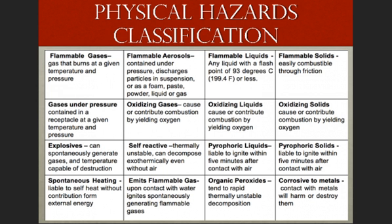There are 16 physical hazards classified under GHS. I will cover each of these physical hazards in this presentation, but for right now I will simply list each one prior to discussing each specifically: flammable gases, flammable aerosols, flammable liquids, flammable solids, gases under pressure, oxidizing gases, oxidizing liquids, oxidizing solids, explosives, self-reactives, pyrophoric liquids, pyrophoric solids, spontaneous heating, emits flammable gas, organic peroxides, and corrosive to metals.